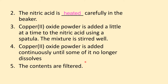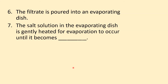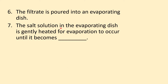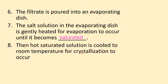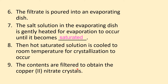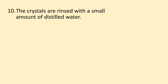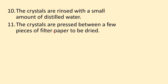Filter the contents to eliminate the excess copper(II) oxide. The filtrate is poured into an evaporating dish. The salt solution is gently heated for evaporation to occur until it becomes saturated. The hot saturated solution is cooled to room temperature for crystallization to occur. The contents are filtered to obtain copper(II) nitrate crystals, which are then rinsed with a small amount of distilled water and pressed between filter paper to be dried.